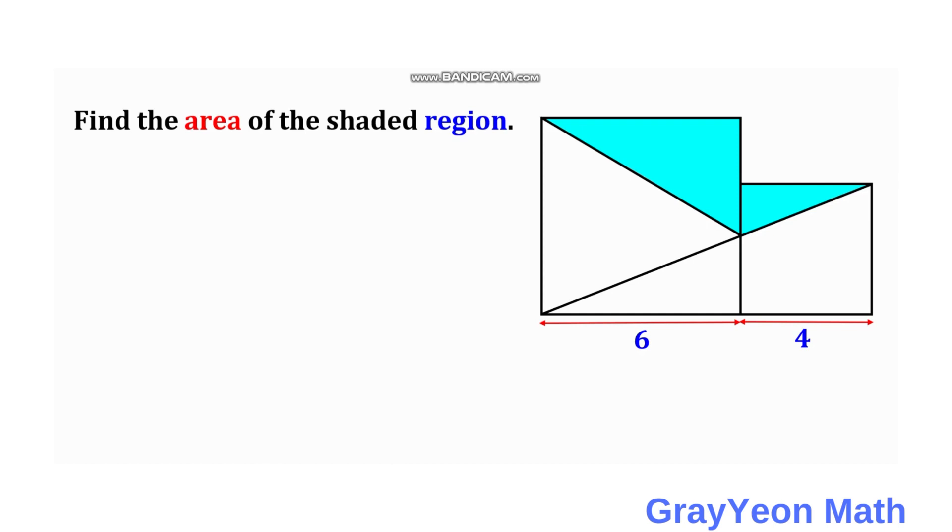First thing that we have to notice is that the area is composed of two areas which are right triangles. Notice that the smaller right triangle is actually similar to this larger white right triangle because of this vertical angle and this vertical angle. This is 90 degrees and this is 90 degrees, and this is another angle corresponding to each other that are congruent. So by angle-angle-angle theorem, these two triangles are similar.